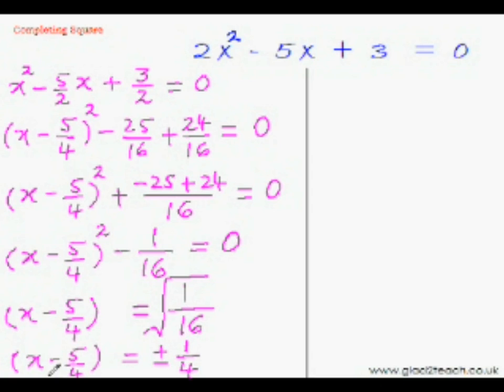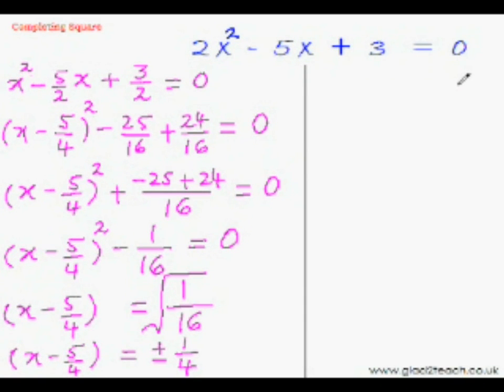And finally we have managed to get this simple linear equation which we can solve to get the two roots of this quadratic equation. So now take this minus 5 of 4 to the other side and it will become plus 5 of 4. So we will have x equal to plus 5 of 4, that is just 5 of 4 plus minus 1 by 4.